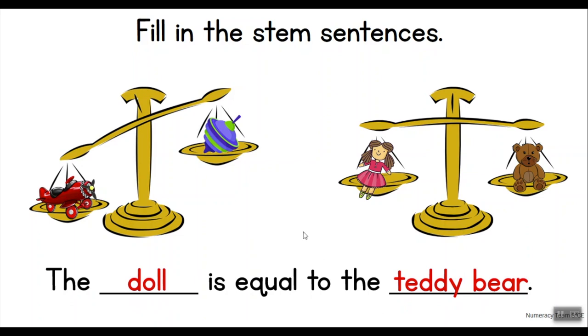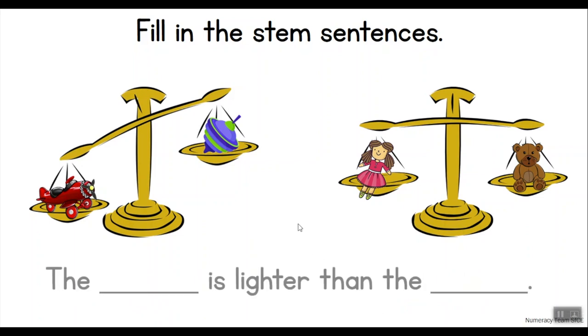Right, so let's move on to the last sentence in this activity. Now here it is telling us: The ___ is lighter than the ___. Here we are seeing the word 'lighter.' Do you know what lighter means? So far we used heavier and equal to, correct. So which toy would be lighter than another?